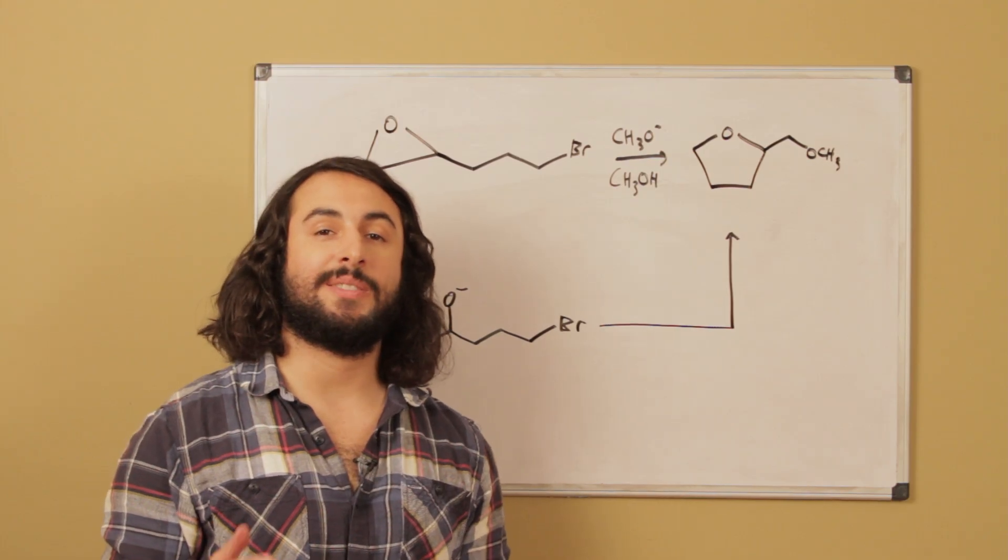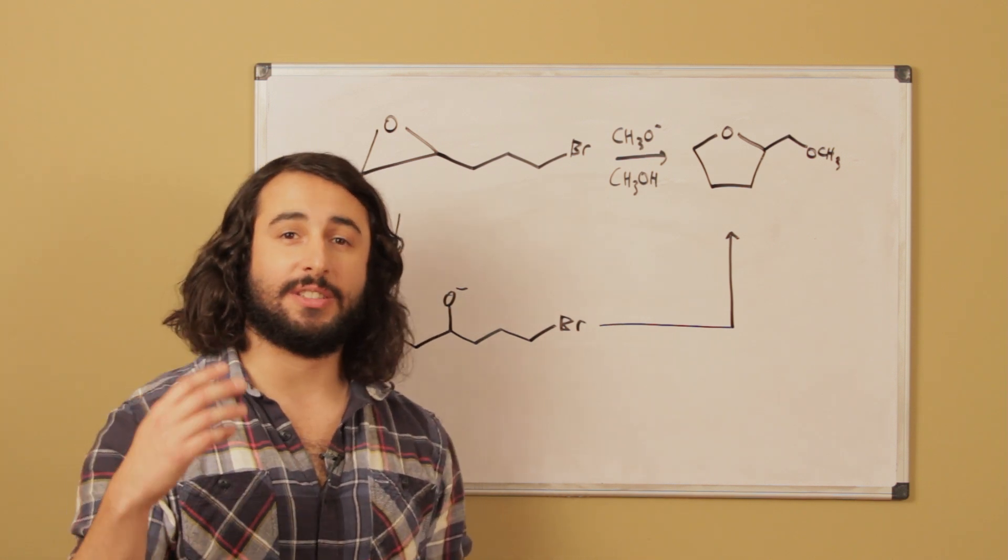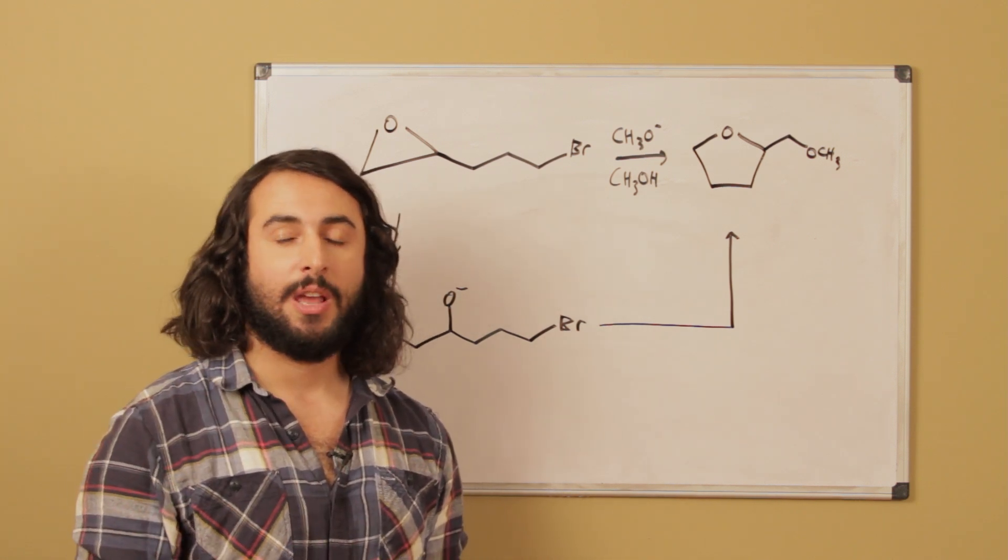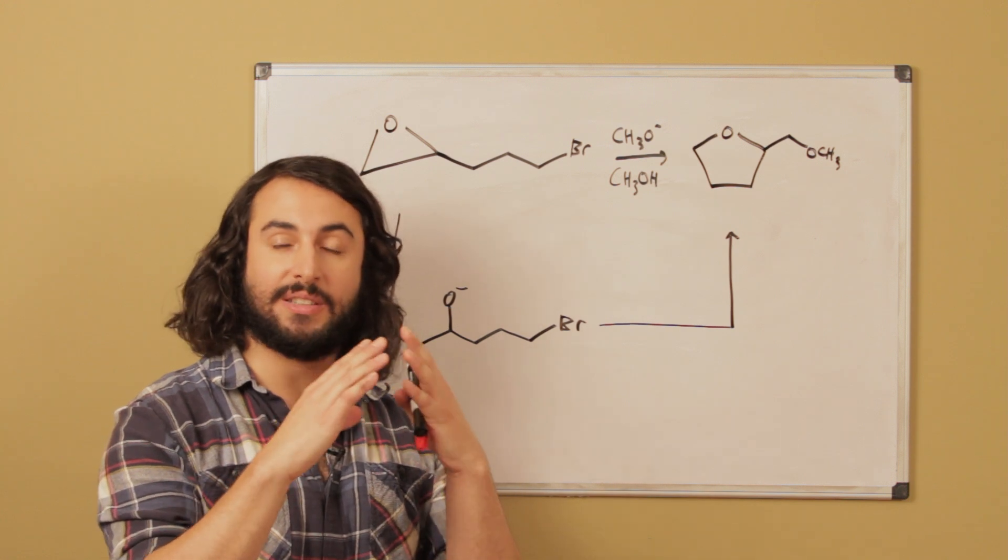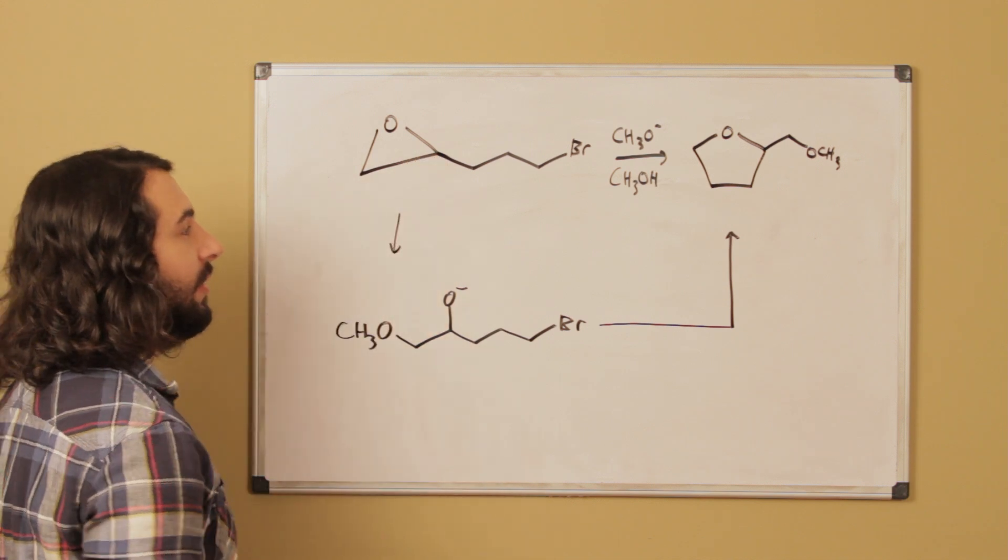Okay guys, so to draw this mechanism we have to recall a couple things about epoxides. Number one, epoxides are very susceptible to nucleophilic attack because there's a lot of ring strain from that small three-membered ring. That means that either of these carbons could potentially be attacked by a nucleophile.